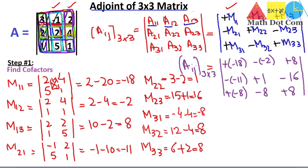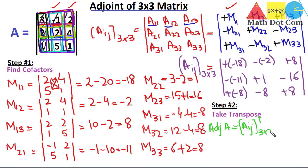Step one is complete — we have found the cofactor matrix. Step two is to take the transpose of this cofactor matrix. The adjoint of A equals Aij transposed for the 3×3 matrix. In the transpose we change rows into columns and columns into rows, giving: first column [−18, +11, −8] becomes the first row; second column [+2, +1, −8] becomes the second row; third column [+8, −16, +8] becomes the third row.